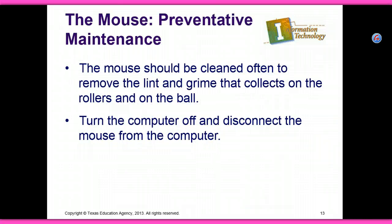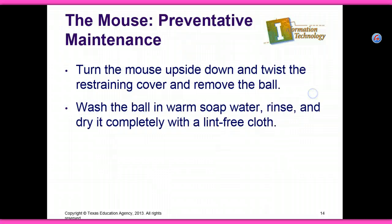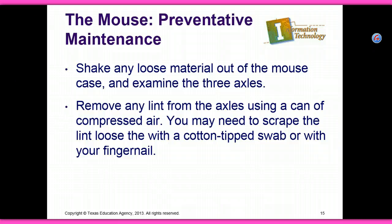The mouse should be cleaned often to remove lint and grime that collects on the roller and the ball if you have that type of mouse. Turn the computer off and disconnect the mouse. Turn the mouse upside down and twist the restraining cover and remove the ball. Wash the ball in warm soapy water, rinse, and dry it completely with a lint-free cloth. Shake any loose material out of the mouse case and examine the three axles. Remove any lint from the axles using a can of compressed air.